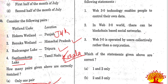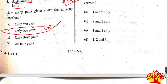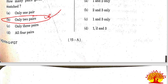Thirty-second question with reference to Web 3.0: all three statements are correct. Web 3.0 technology enables people to control their own data, and in the Web 3.0 world there can be blockchain-based social networks operated by users rather than corporations. Option D, statements 1, 2, and 3, is the correct answer.